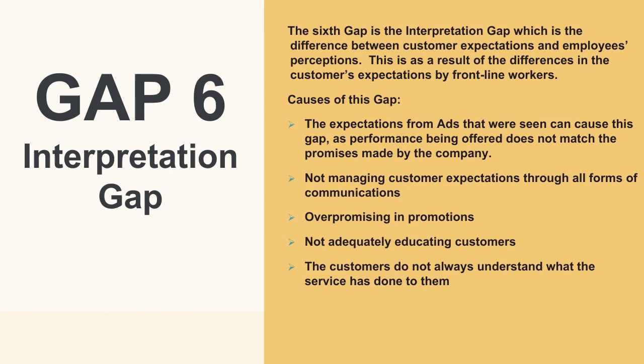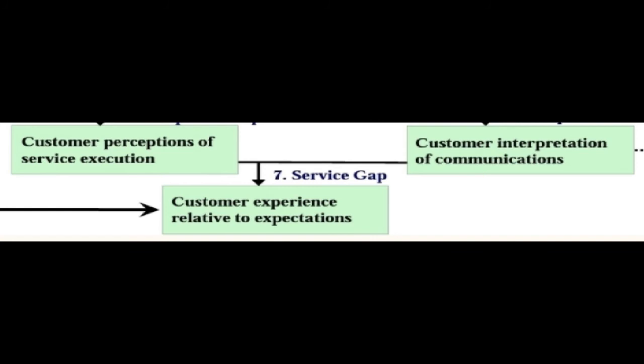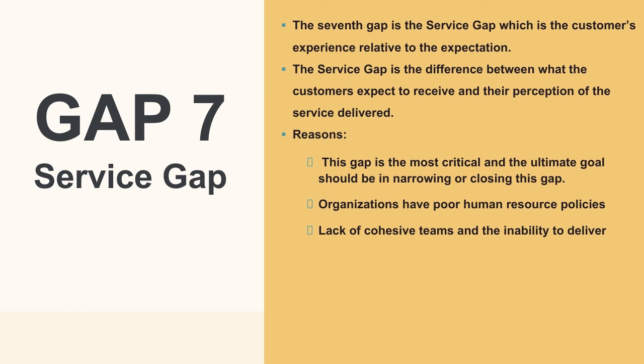The seventh and most critical gap is the service gap — the difference between what customers expect to receive and their perception of the service delivered. This gap is strongly influenced by the previous six gaps, so it is important that the company works on closing those first. Organizations with poor human resource service policies, lack of a cohesive team, and inability to deliver on promised services will experience this gap.